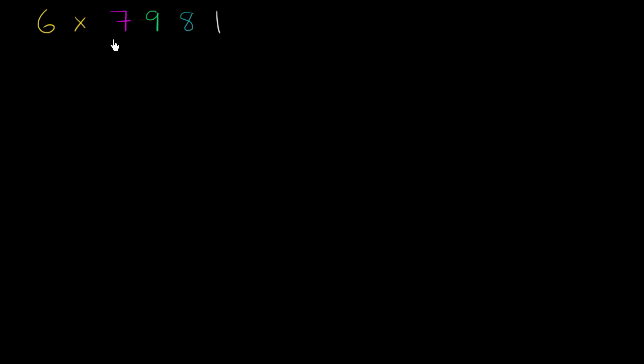Let's multiply 6 times 7,981. And the way we're going to do it right now is just to represent or expand out 7,981 as 7,000 plus 900 plus 80 plus 1.